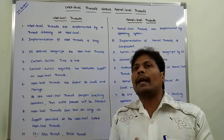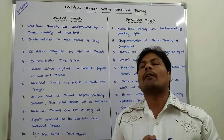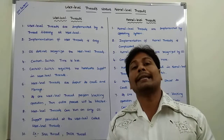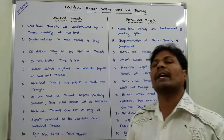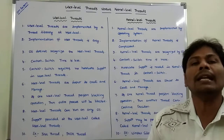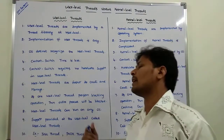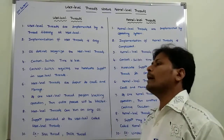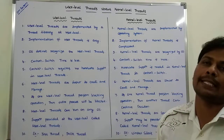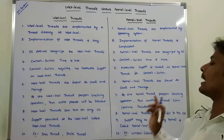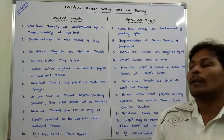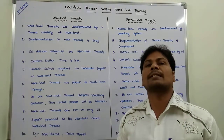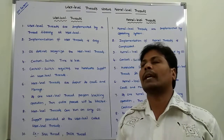Support provided at the user-level is called user-level threads, and support provided at the kernel-level is called kernel-level threads. Examples of user-level threads are Java threads and POSIX threads. Examples of kernel-level threads are Windows Solaris threads.